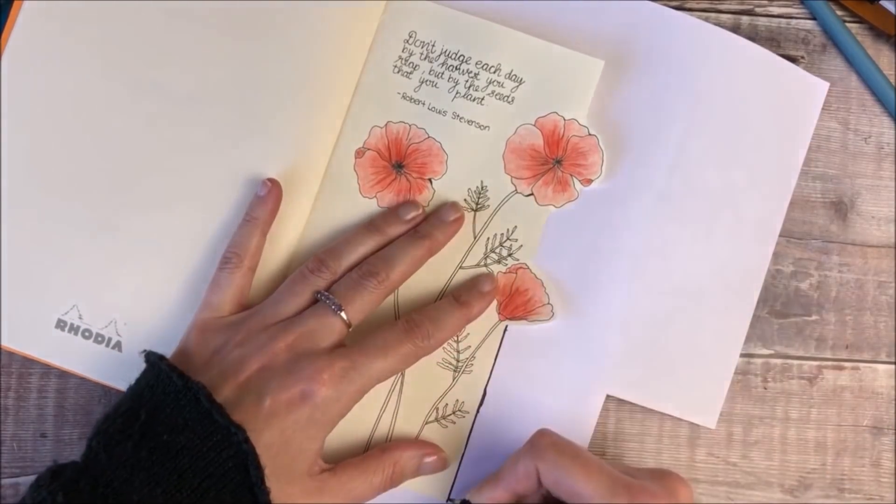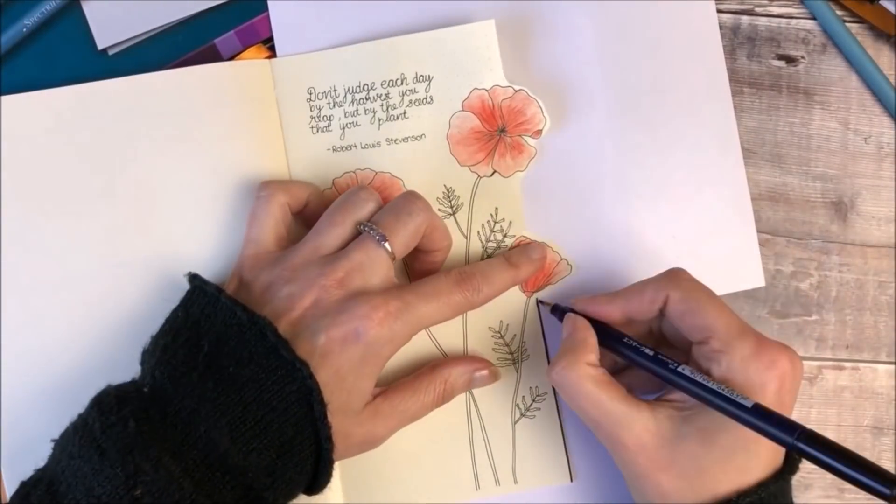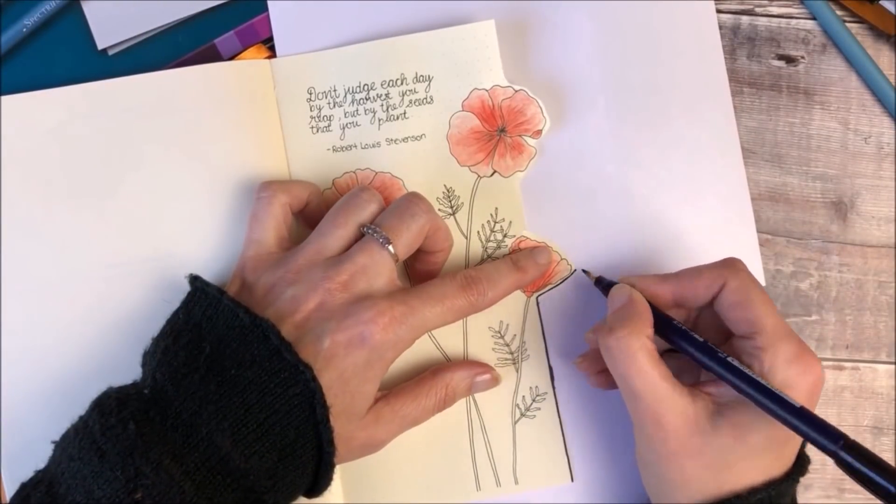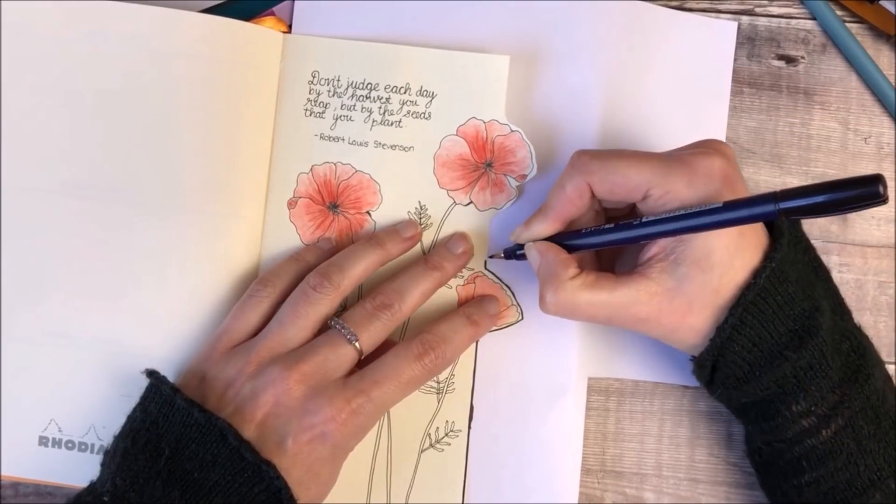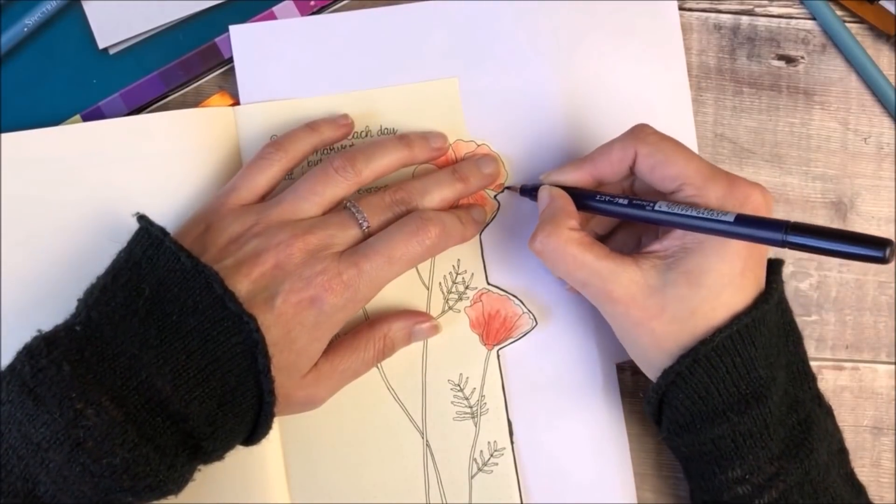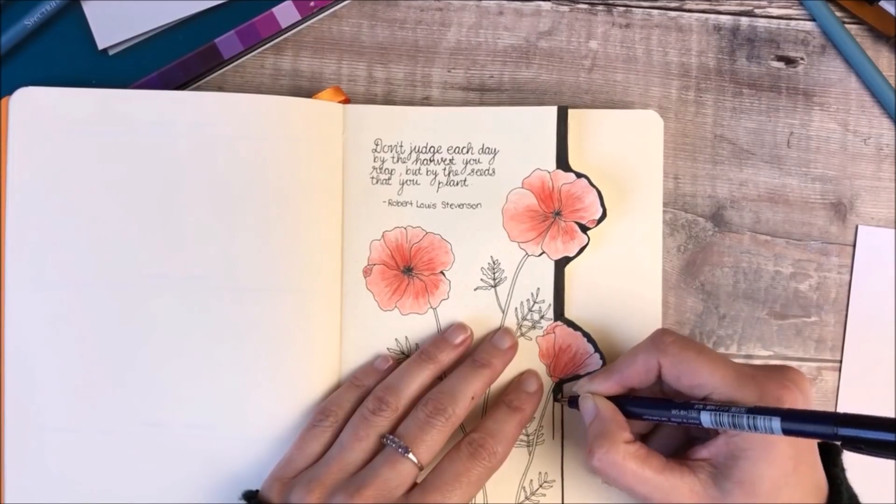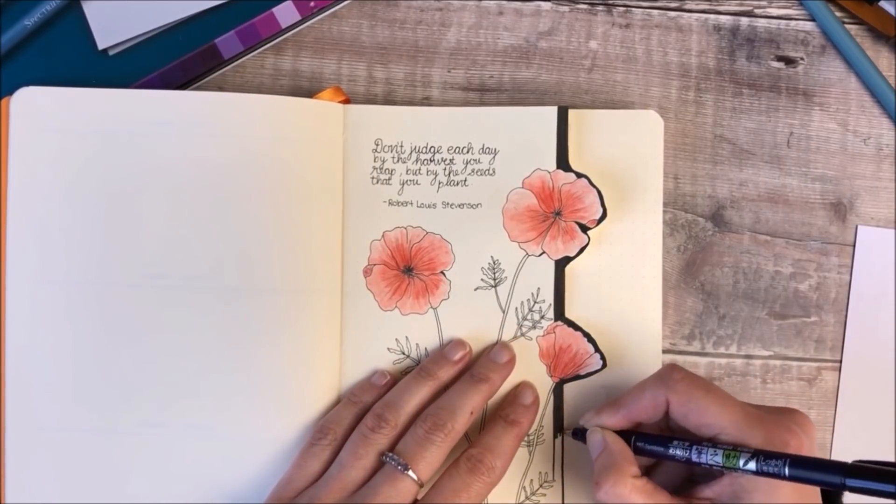I started off by using the Tombow Fudenosuke to do a thin line along the edge of the page, and I've placed a piece of paper underneath it to make sure it doesn't go onto the page below. I started off with a really thin line and didn't think that looked right, so I then brought that black line out further onto the page.